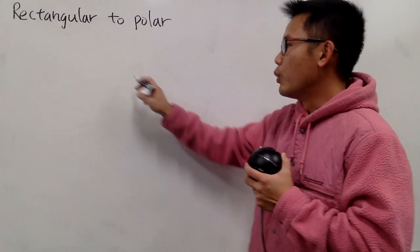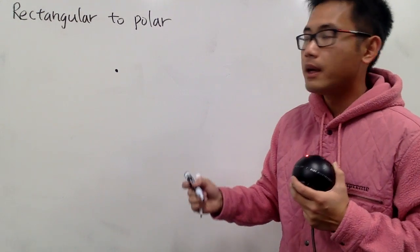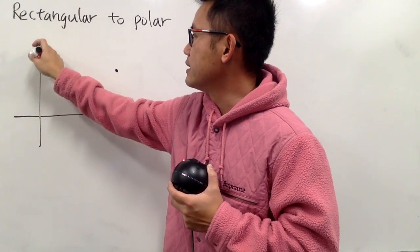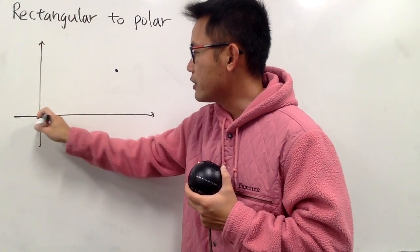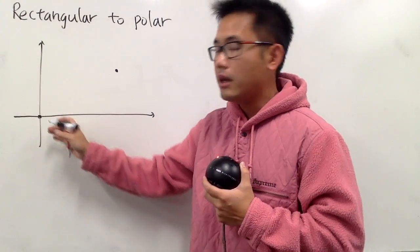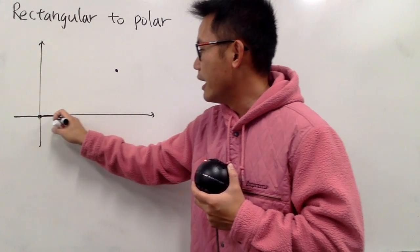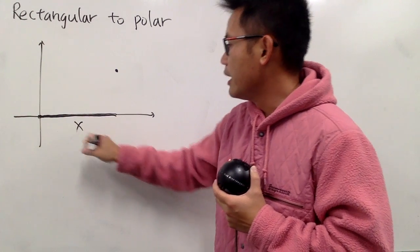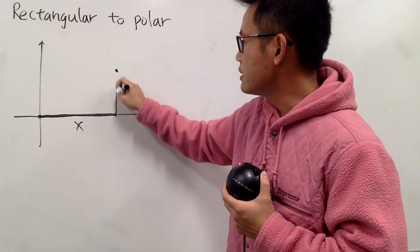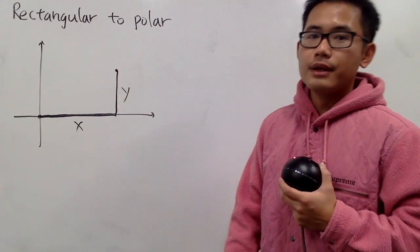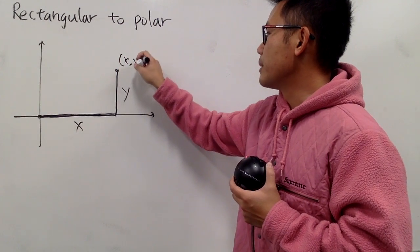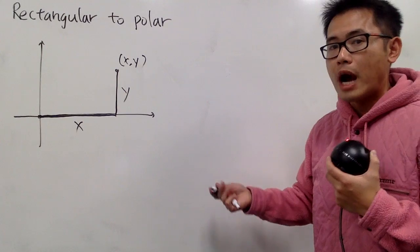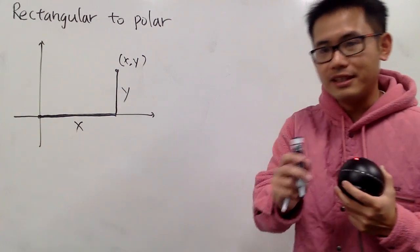The idea is that when we have a point on the plane, to describe where this point is, we can set up an x and y-axis. From the origin, you have to tell me how many units to move left or right — that's the x value — and how many units to move up or down — that's the y value. So this is (x, y). But our goal is that maybe there's another way to describe where this point is from the origin.